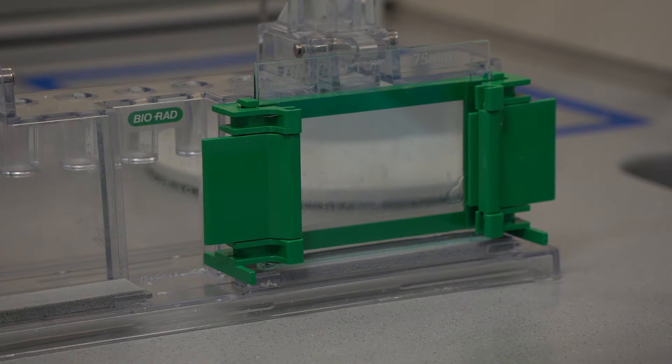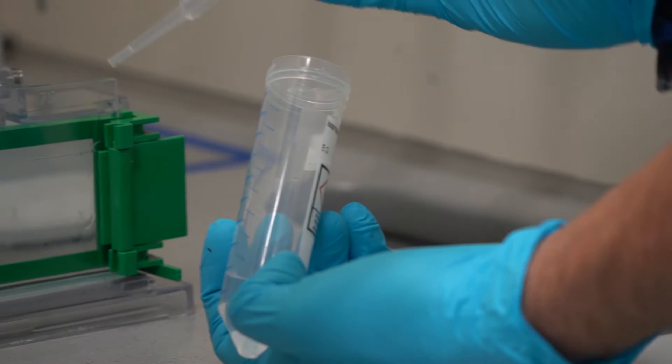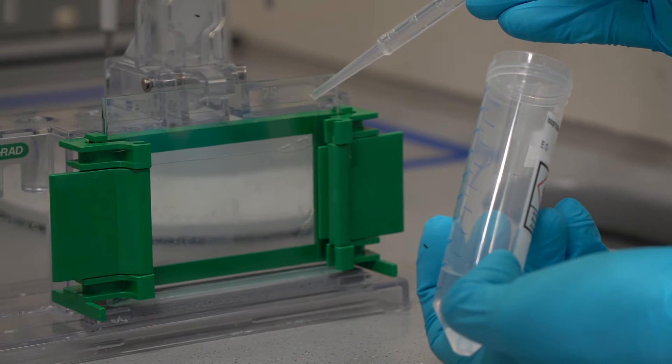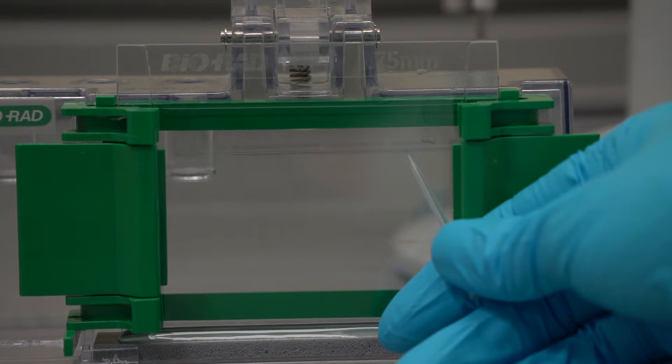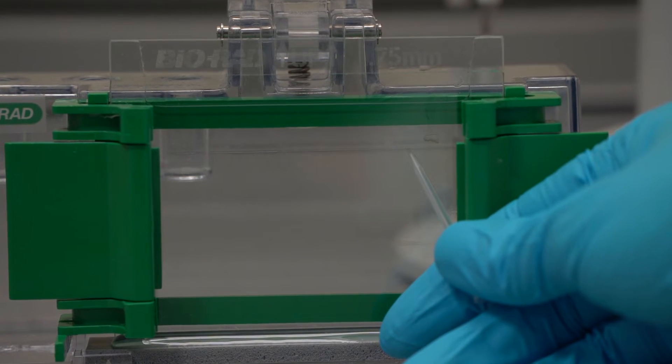Pipette the running gel solution between the glass slides to approximately 10-15mm below the top of the shortest glass plate. Carefully fill in the remaining space between the glass plates with isopropanol. This ensures that the top of the running gel is completely straight. Now let the running gel polymerize.